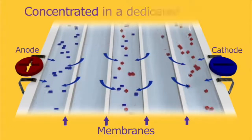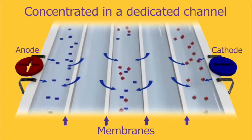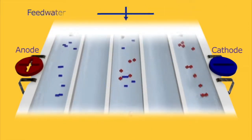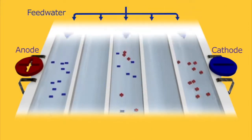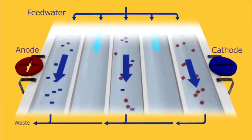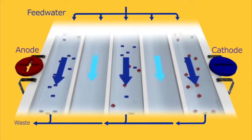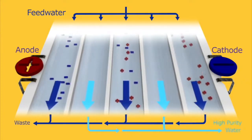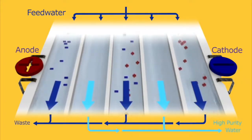Water molecules are left behind, resulting in a concentration of ions in a dedicated channel. The ions are collected and removed in a small waste stream, whereas the water molecules are gathered into a deionized path flow. The resulting purified water is then available for your applications.